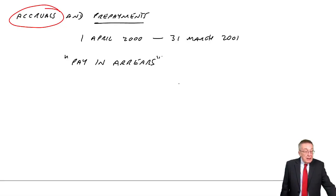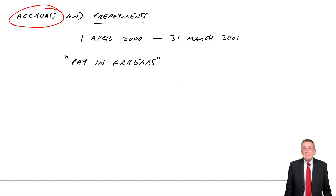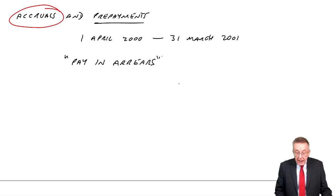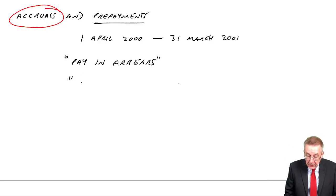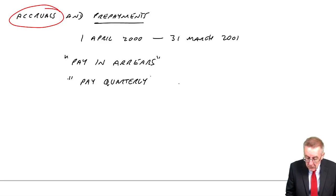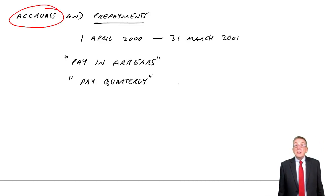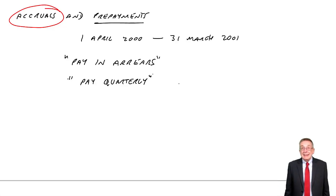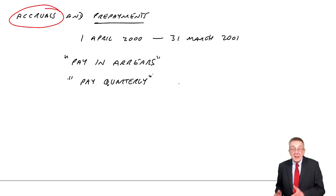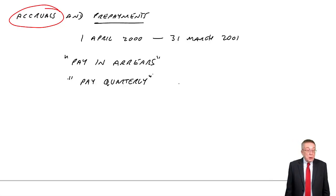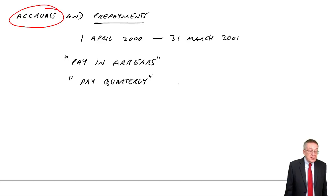We're paying for every 3 months at a time — paying quarterly. Paying in arrears means you pay late; you use the telephone and then you get the bill and pay it. If you're ever told you're paying quarterly, it means you're paying for 3 months at a time. Paying quarterly in arrears is effectively what we have here.